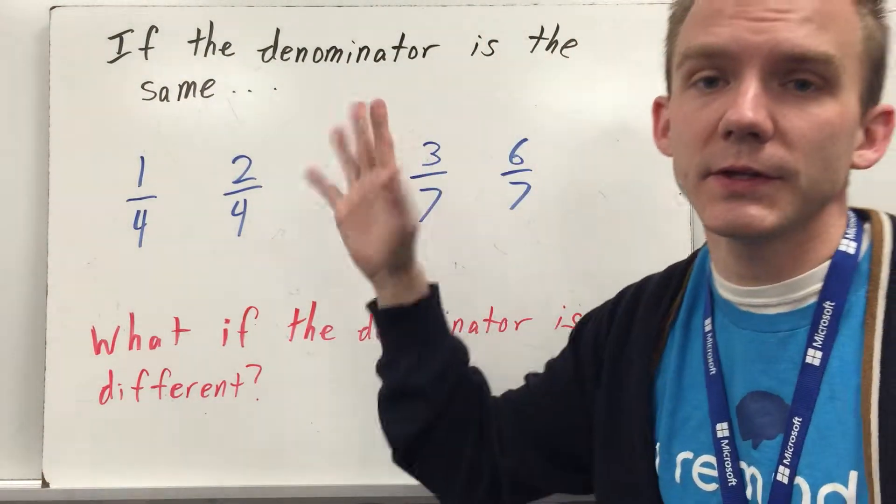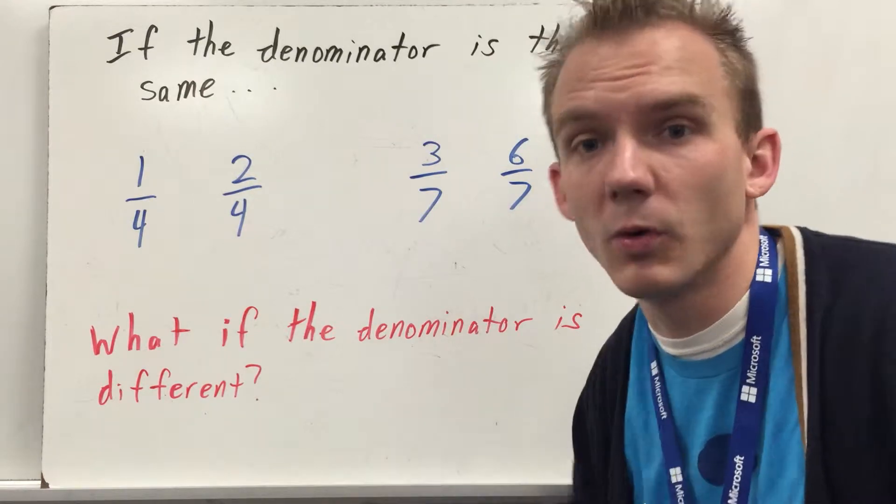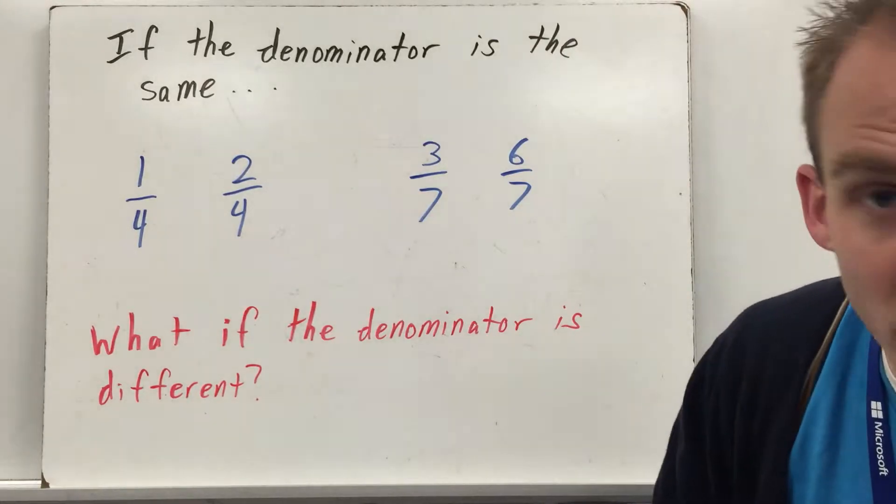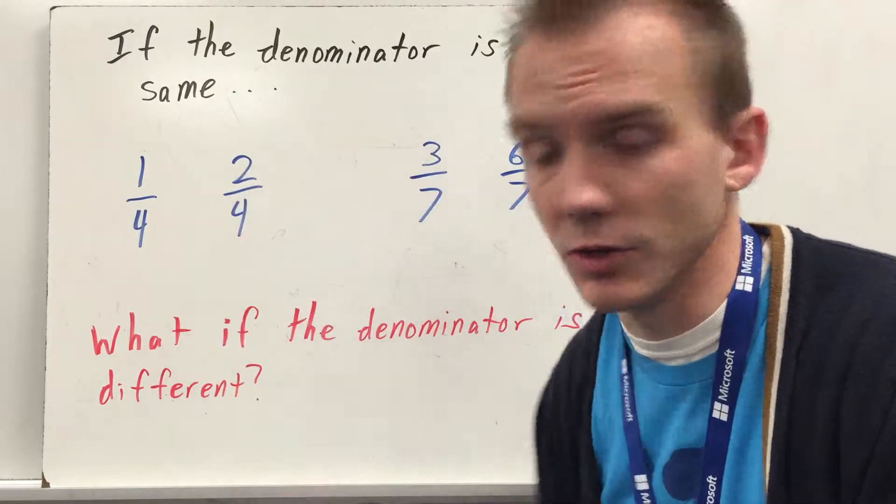So when we compare if the denominator is the same, that's straightforward and simple, just like comparing regular whole numbers. Say I have one-fourth and two-fourths. What I do is I just look at the denominator, oh it's the same.